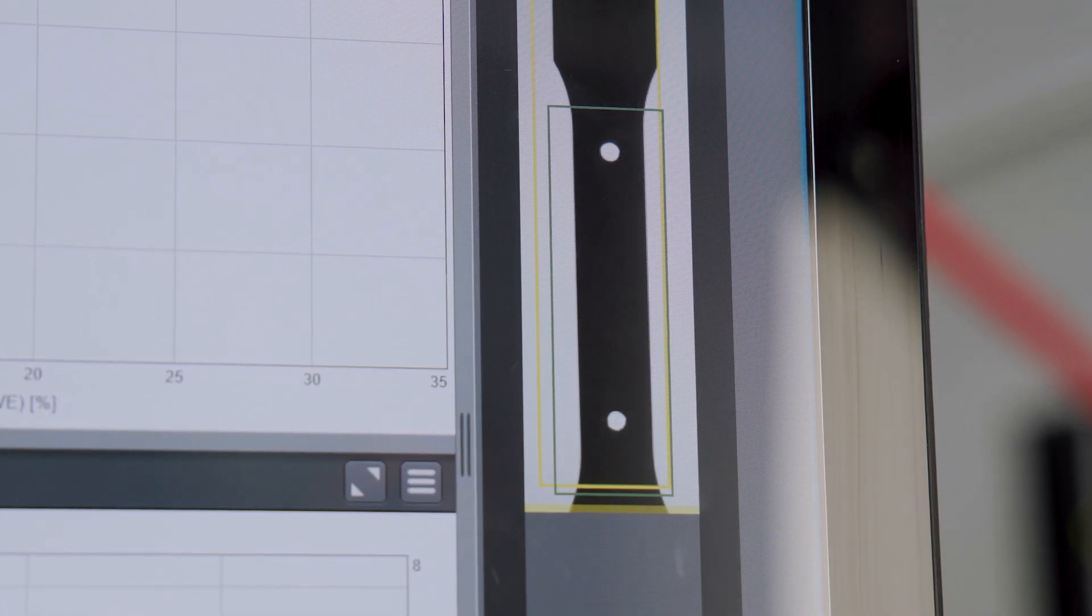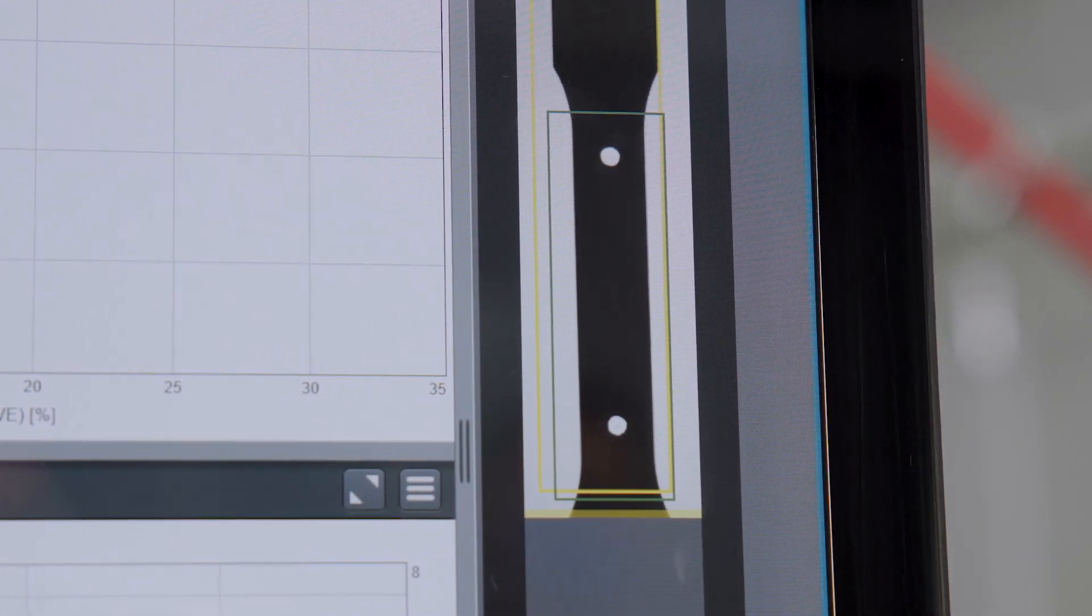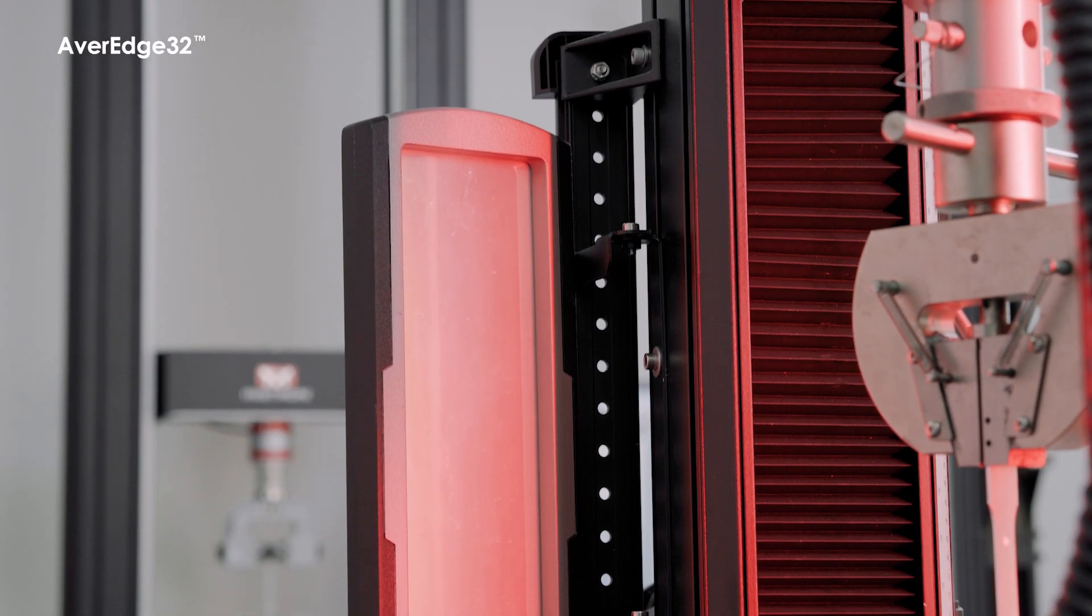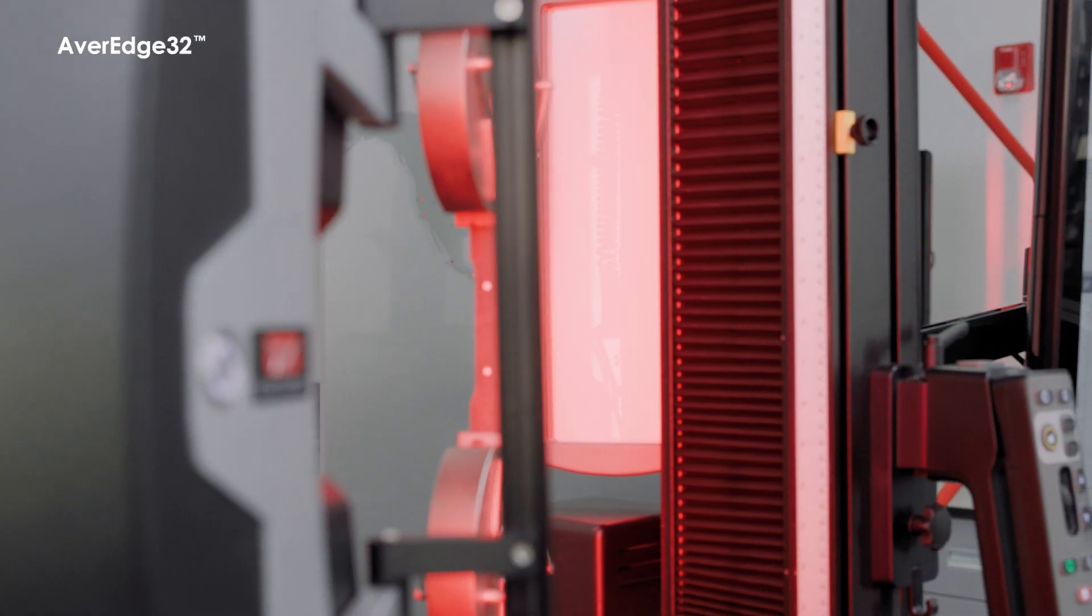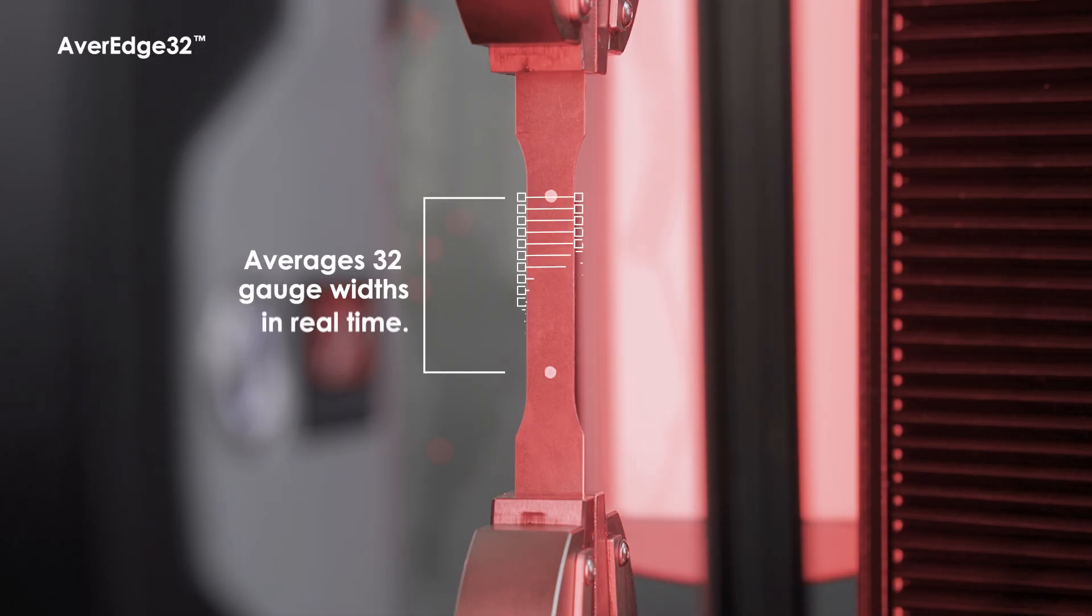For those requiring R-value or plastic strain ratio measurement, the optional Average 32 feature provides best-in-class transverse strain accuracy by averaging 32 measurements from within the specimen gauge length.